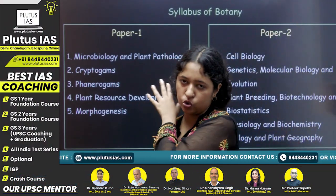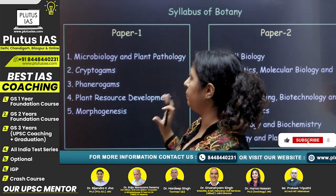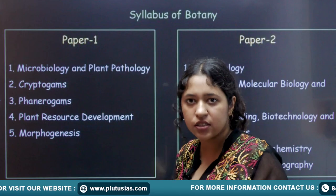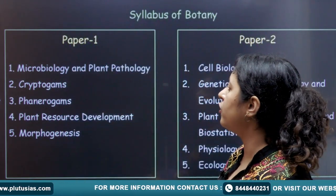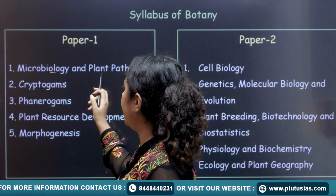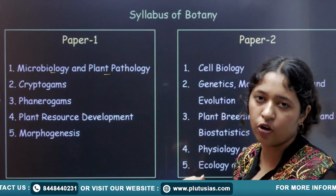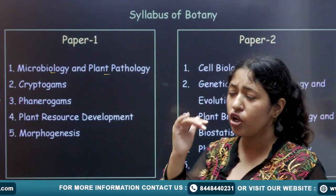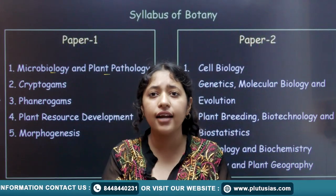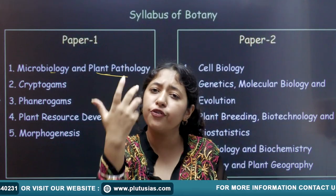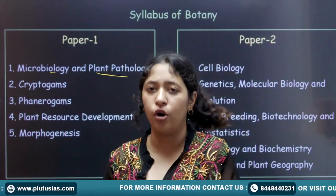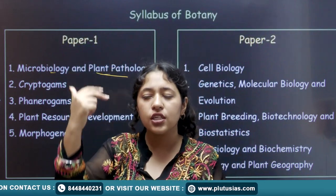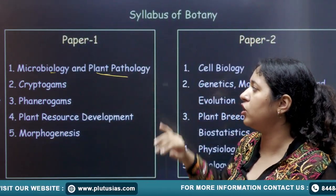These are the topics of paper one and paper two. Paper one is more on the core side — more factual, more memory-based. Paper two is more application-based and conceptual. In paper one, you have microbiology and plant pathology. In microbiology, you will study different microorganisms like bacteria, bacteria-like organisms, viruses, and the prion hypothesis. In plant pathology, you will study pathogenic interactions, and the most important thing is studying different diseases in a specific pattern: the causative organism, symptoms, preventive measures, and control.